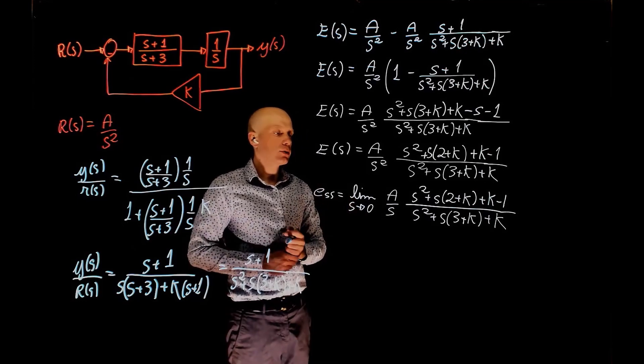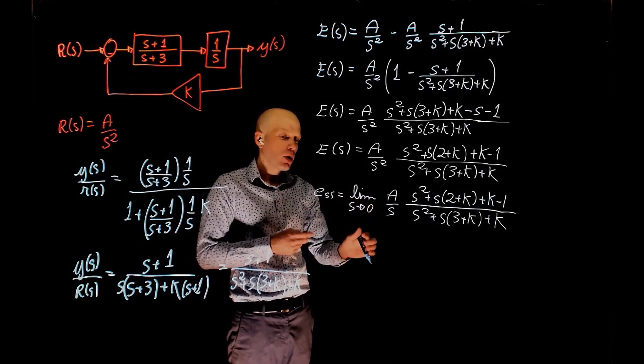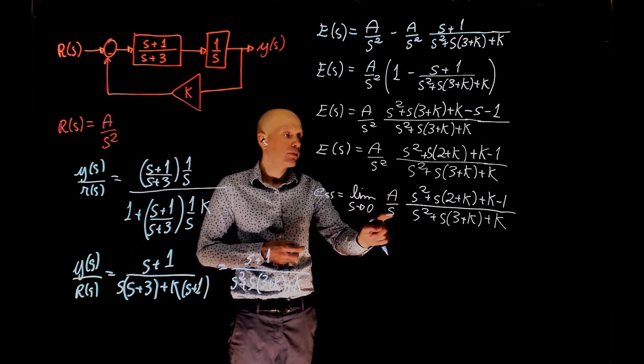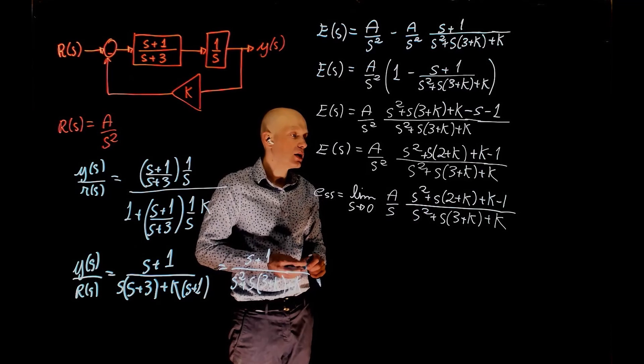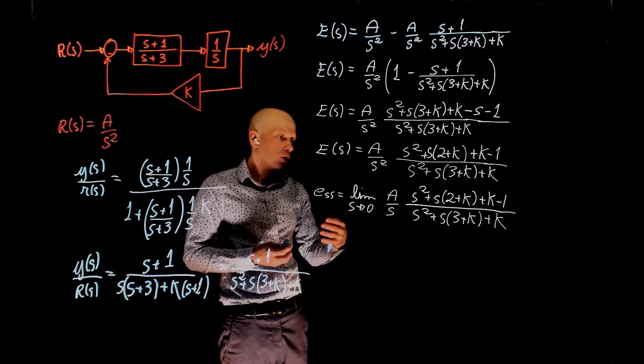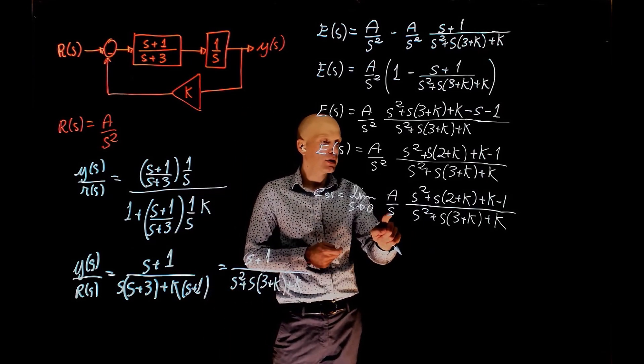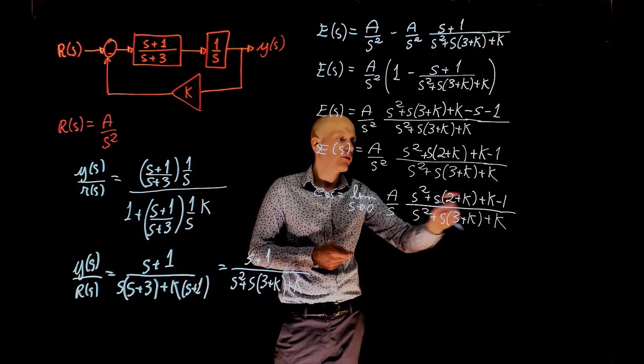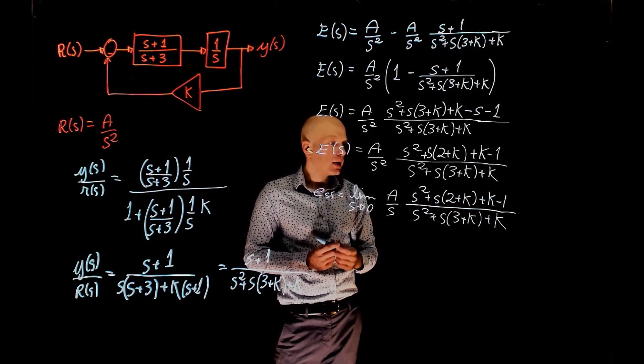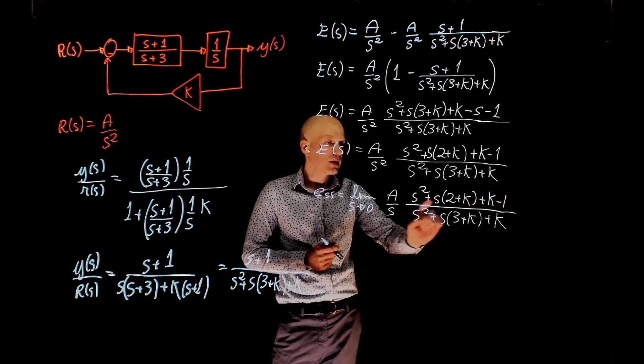Now let's analyze the result we have here. As it stands, when s tends to 0, a over s tends to infinity, and the error in steady state tends to infinity. The only way this does not tend to infinity is if somehow we can cancel this s with one of the s's from the top here. That can be done if we can eliminate k minus 1, because that's the term that doesn't have s.